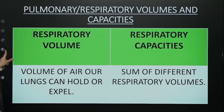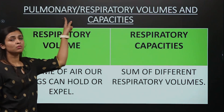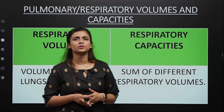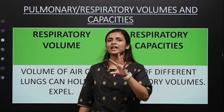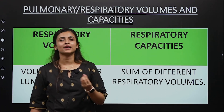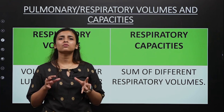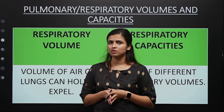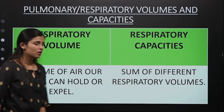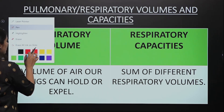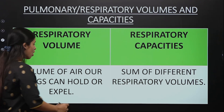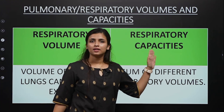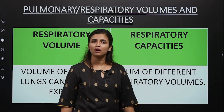Respiratory volumes are also called pulmonary volumes, since pulmonary refers to the lungs. What exactly is respiratory volume and respiratory capacity? The volume of air that we take in, hold inside our lungs, or expel out — all these volumes are called respiratory volumes. But if we add two or more than two respiratory volumes, the value we get is called the respiratory capacity.